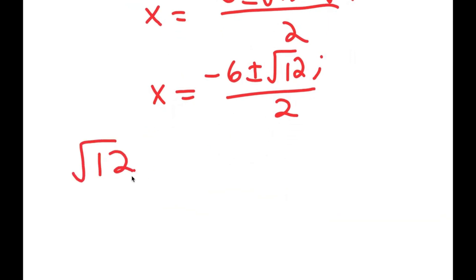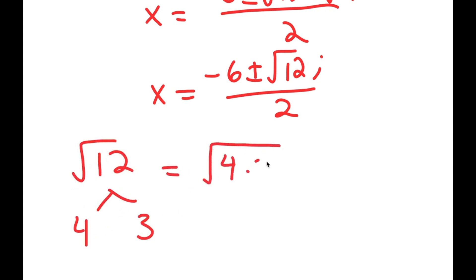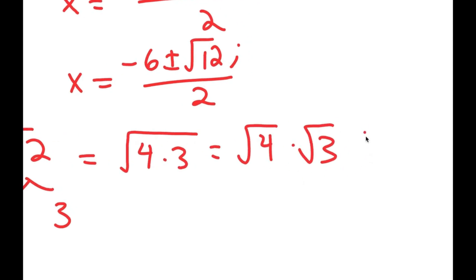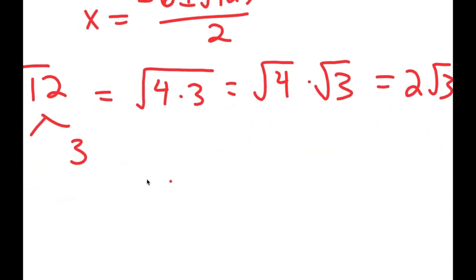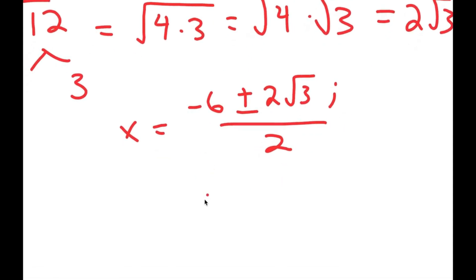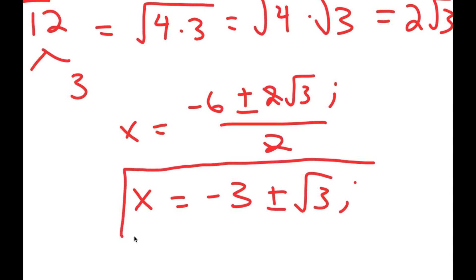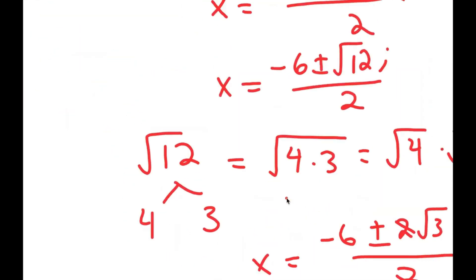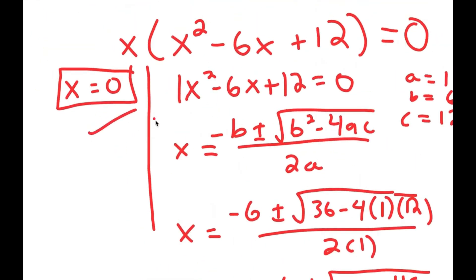The square root of 12 is the same thing as the square root of 4 times 3, which equals the square root of 4 times the square root of 3. The square root of 4 is 2, so this equals 2 root 3. So I get x is equal to negative 6 plus or minus 2 root 3 i over 2. Dividing by 2, I get x is equal to negative 3 plus or minus square root of 3 i. So my three solutions are x equals negative 3 plus root 3 i, x equals negative 3 minus root 3 i, and x equals 0.